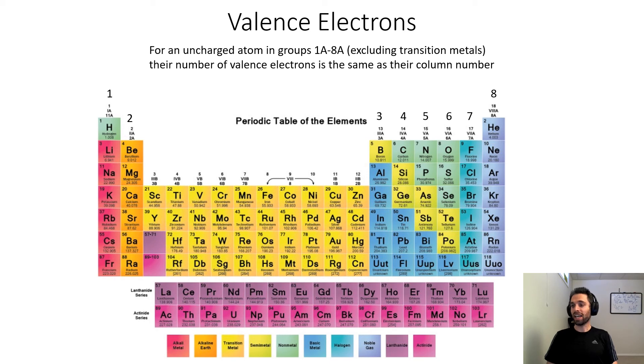Group 8A has one exception to this rule: helium. Because helium only has two electrons, as we can see based on its atomic number, it's the one exception in this column.